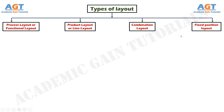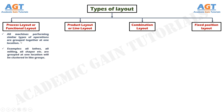We will now discuss about them in details. Let's start with process layout or functional layout. In process layout, all machines performing similar types of operations are grouped together at one location — for example, all lathes, all milling, all shapers, etc., are clustered in like groups. Thus, in process layout, the arrangement of facilities is grouped together according to their function.